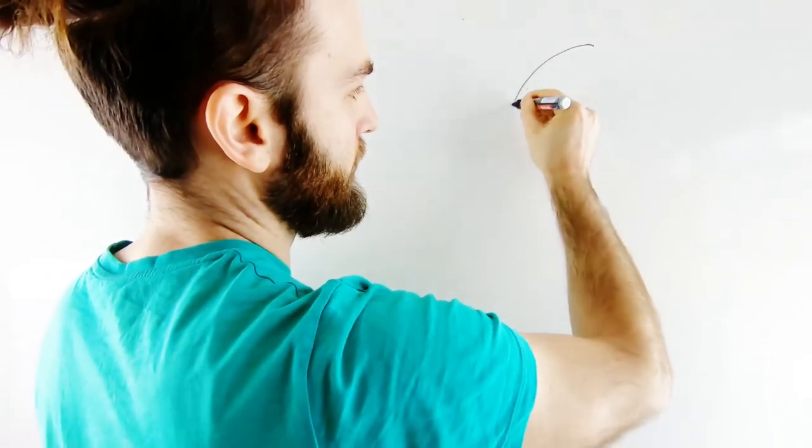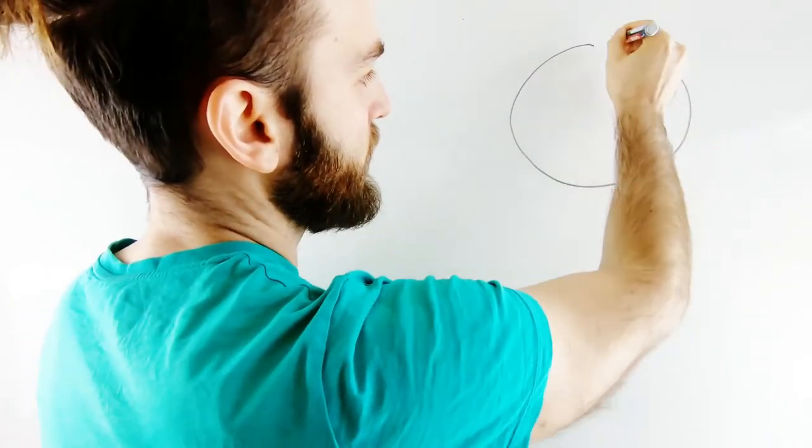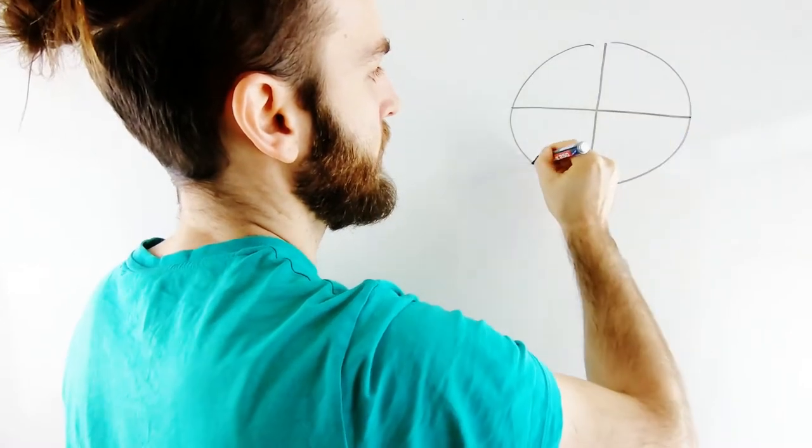Okay, circle number one. You draw a circle, you divide it in eight, and then you fill it with eight topic ideas. Let me fill.